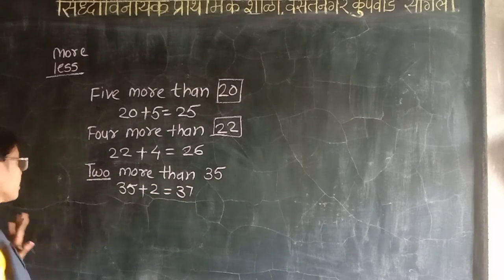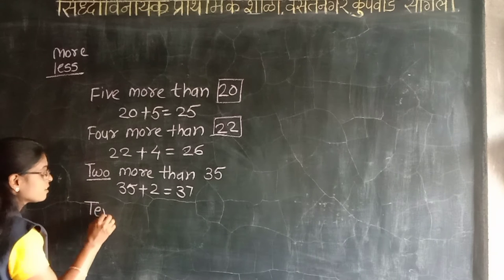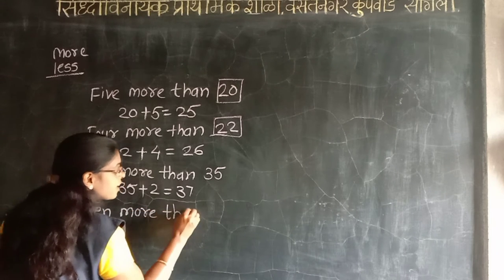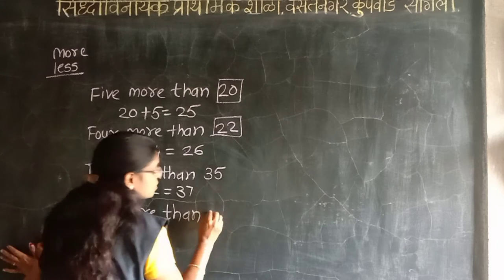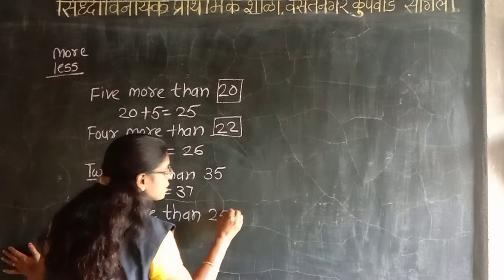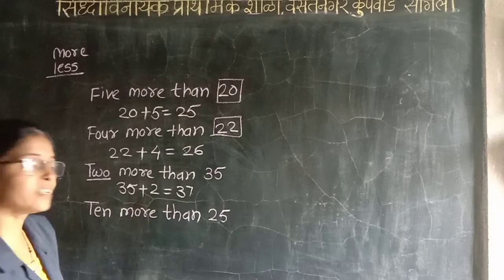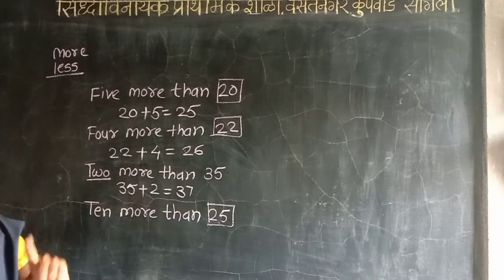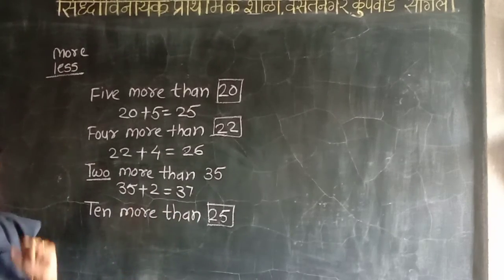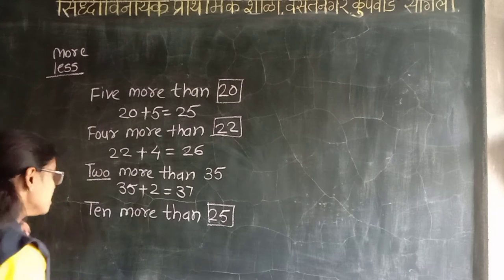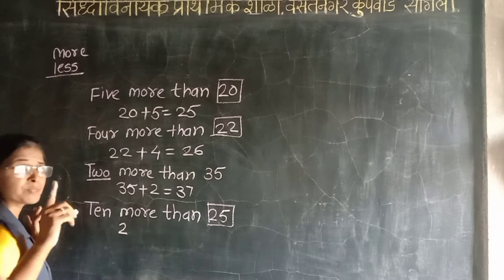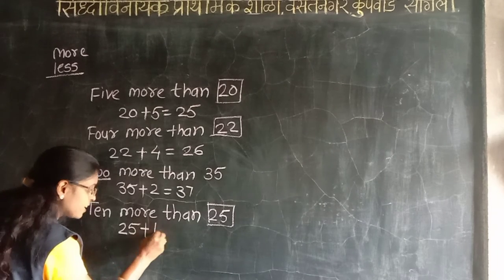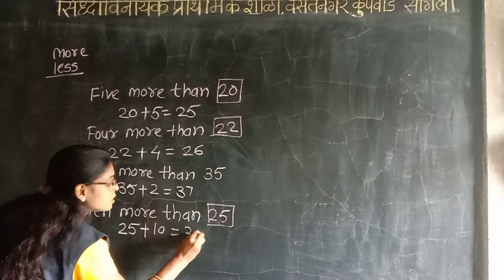Now this part: 10 more than 25. 10 more than 25 — means 25 plus 10. Kiti ya le? Means 10. OK, 35.